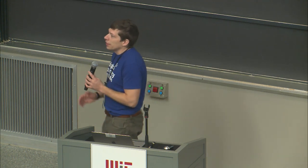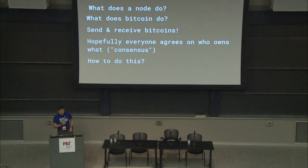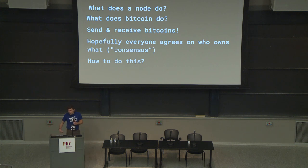So what does a node do? That begs the question, what does Bitcoin even do? We want to just send and receive Bitcoins. The hard part is that we want everyone to agree on all those sends and receives — the consensus part. We want a system where I can send you a Bitcoin and everyone else in the entire system agrees that yes, you received it.